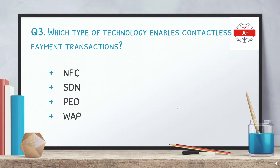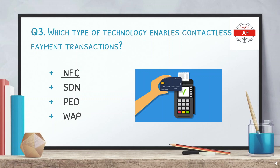The third question: which type of technology enables contactless payment transactions? The choices are NFC, SDN software-defined networking, PED, and WAP. The answer is NFC, or Near Field Communication. This feature allows transactions between two devices or between a card and a POS point without inserting the card, hence contactless payment.